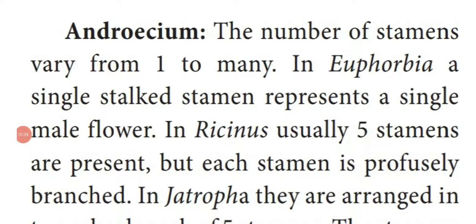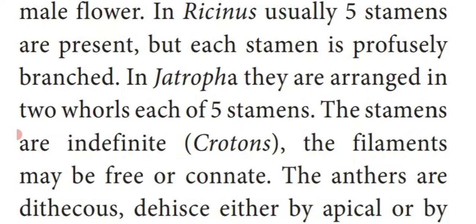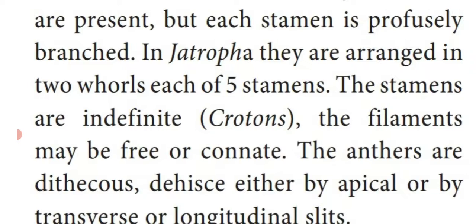Next, androecium is the male reproductive organ. The number of stamens varies from one to many. In Euphorbia species, stamens represent a single stalk. In Ricinus communis, five stamens are present but each stamen is profusely branched. In Jatropha, it contains five stamens arranged in two whorls or two circles. Indefinite stamens are present in Croton.